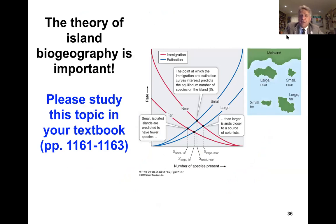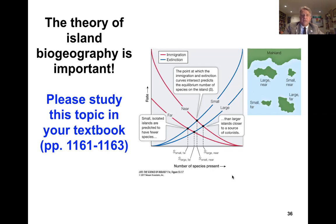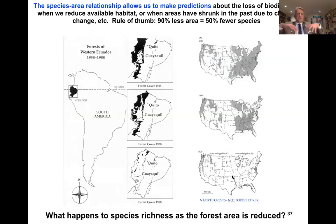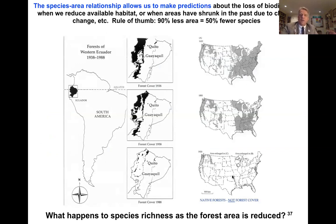Island biogeographic theory is very important — please study this topic in your textbook readings. This species-area relationship and island biogeographic theory, even when not applied specifically to islands, allow us to make predictions about the loss of biodiversity when available habitat is reduced or when areas have shrunk due to climate change. The rule of thumb is that 90% less area results in about 50% less species diversity.